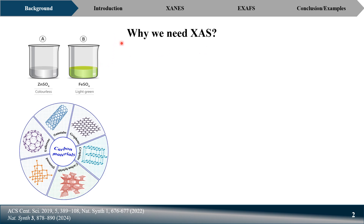To understand why we need XAS, consider this example: suppose you want to synthesize one interesting material and you choose some active metals like zinc and iron, mix them with carbon materials to make your material more conductive, and after mixing you apply it for some application and get very good results.